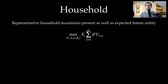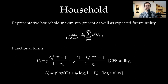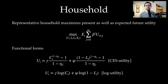E_T here is the conditional expectation operator based on information available at period T. Beta is the discount factor — how patient is the household. U_T is the contemporaneous utility function. I will consider two cases: a CES utility function, and then a special case, the log utility function. Both utility functions are additively separable with two arguments. The marginal utility of consumption is positive, so the household likes to consume, but more labor reduces utility — the household actually likes not to work.